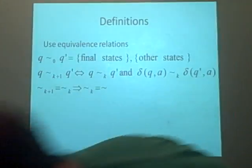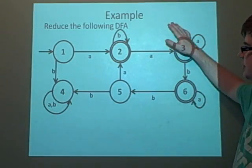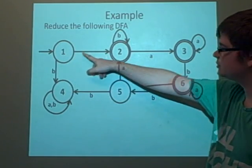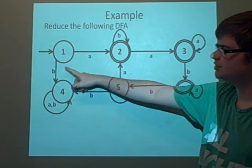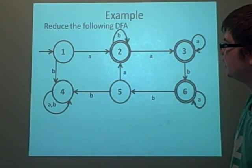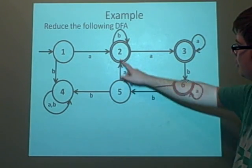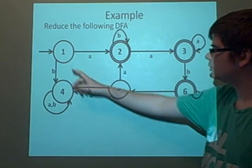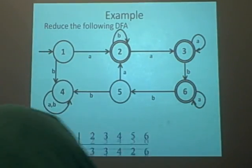So, example. We want to reduce this DFA here, starting with states 1, 2, 3, 4, 5, 6, and we're going to apply letters A and B all over the place. It's a complete DFA, and we can see that the final states are 2, 3, and 6, and the other ones are 1, 4, 5. So that's how we're going to split them up for the zero equivalence.